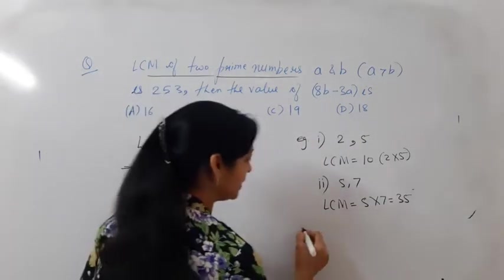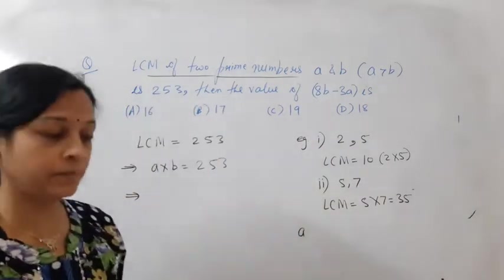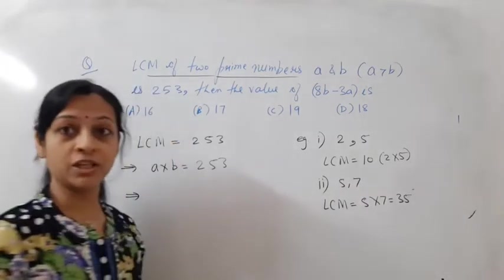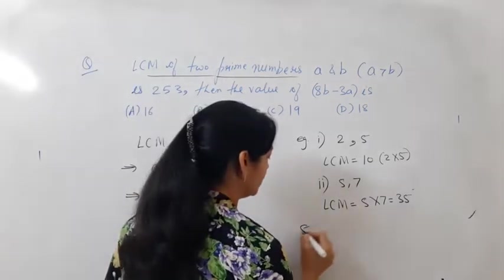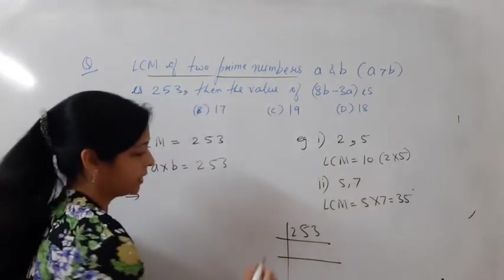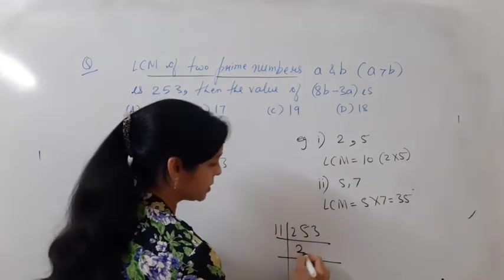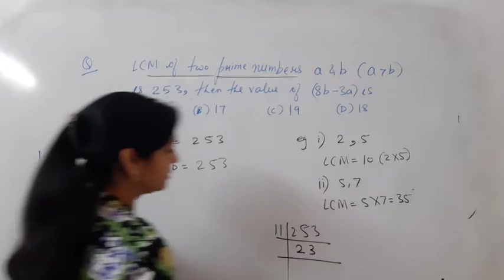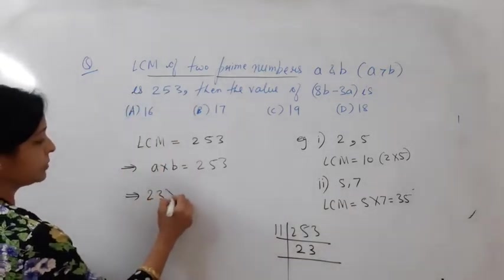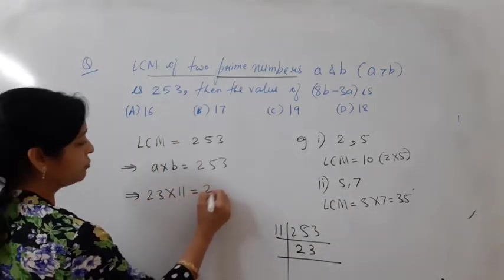So how to find A and B? You will find A and B by doing the prime factorization of 253. Take 11, 11 into 23 is 253. So in the prime factorization you get 23 and 11, two factors.